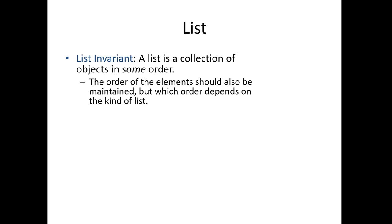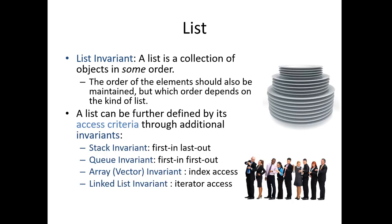One kind of criteria that we can add is an access criteria, telling us how we access the elements of the list. By adding some access criteria, we can get a couple different kinds of lists. The first one is the stack invariant. A stack is a special kind of list, embodied by the stack of plates I've got here. The idea about a stack is that we can only access the elements from the top. The top plate is the one that we can take off the stack. Once we've taken it off, we can get the one underneath it. If we want to access one of the plates lower down, we first have to remove all of the plates above it.